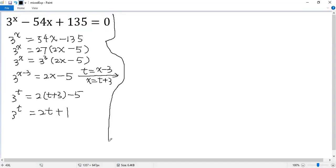So let's see. If t equals 0, the left side equals 3 to the power of 0 equals 1. We can write it as 2 times 0 plus 1. That is the right side. So t equals 0 is a solution for the equation.